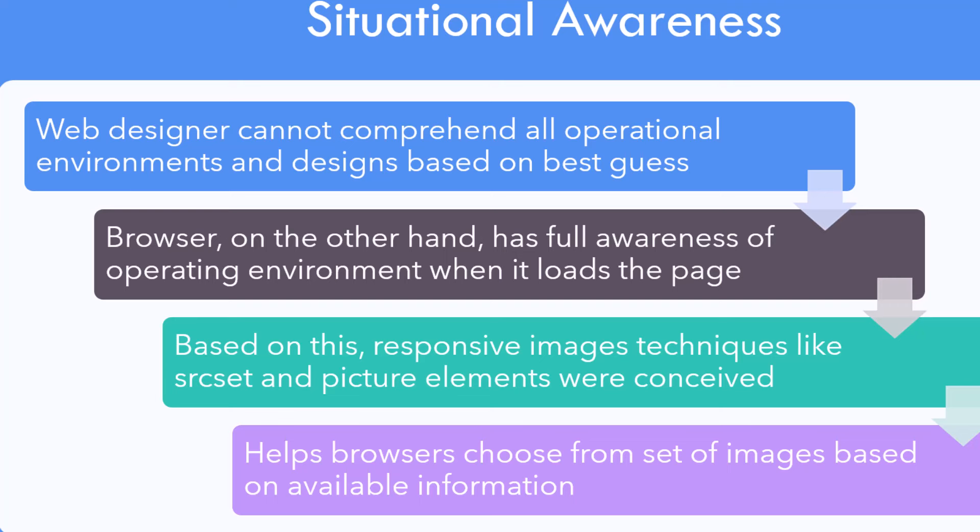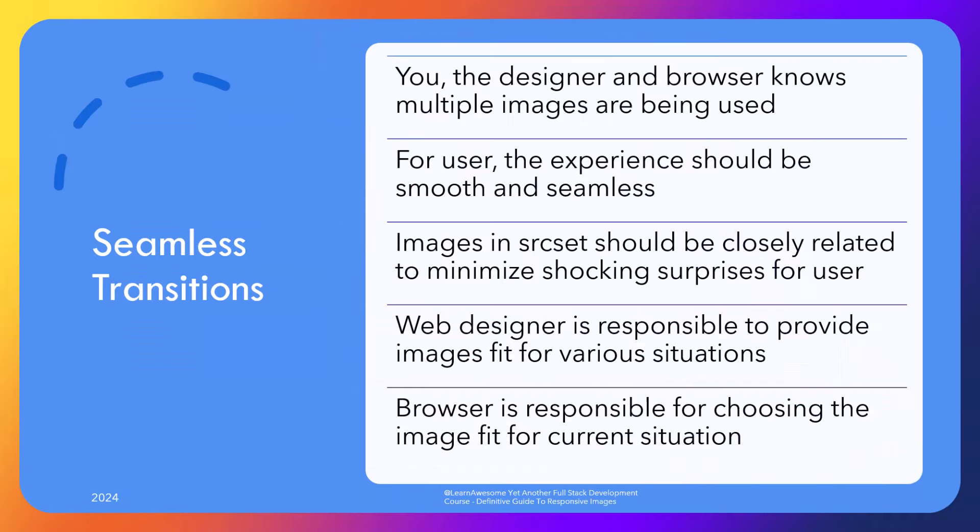Source set allows us to give the browser not one, but a set of images to choose from for downloading and display. For the scenarios we covered, it makes sense to have an image suitable for portrait mode, another for small to medium resolution widescreen, and yet another for high and ultra high-res display screens. The browser would choose the image that best suits the operating environment and download only that option. From the user's perspective, they are still looking at the same image upon resize.